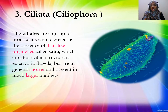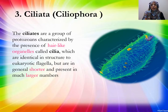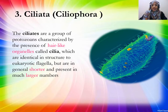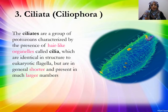In Flagellata, they have one or two flagella which are used for movement and locomotion. Then Class Sarcodina means they have no proper locomotory organs, but their cytoplasm has projections and they show movement. The third class is Ciliata — they have hair-like structures called cilia, which are identical in structure to eukaryotic flagella, but shorter.